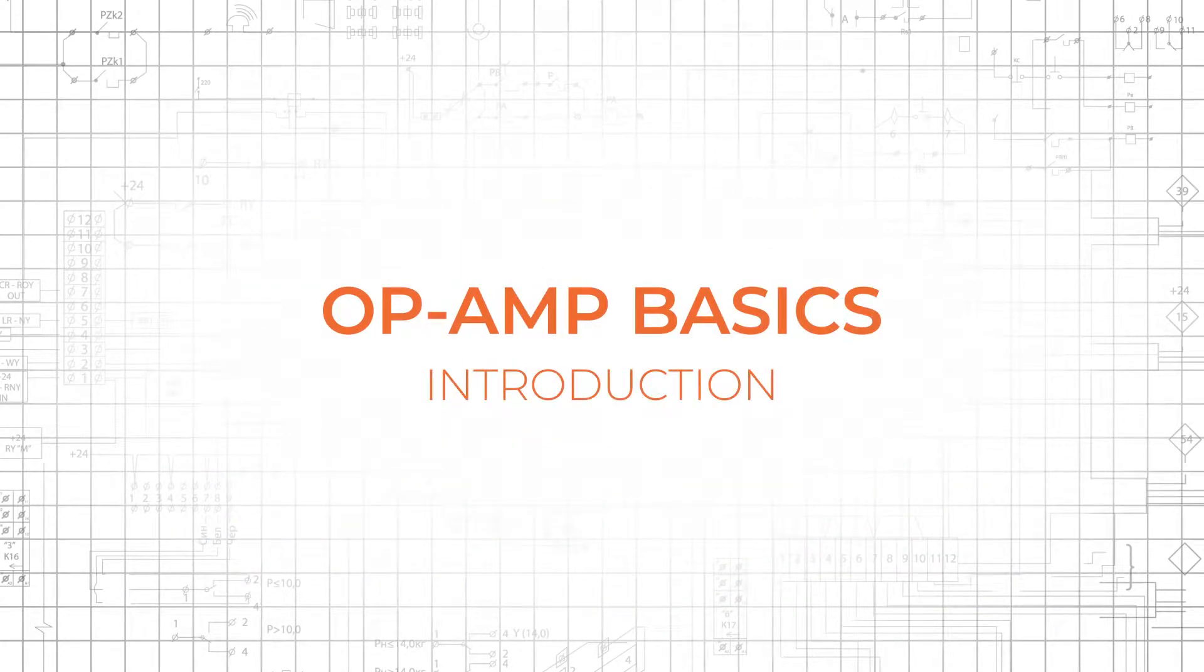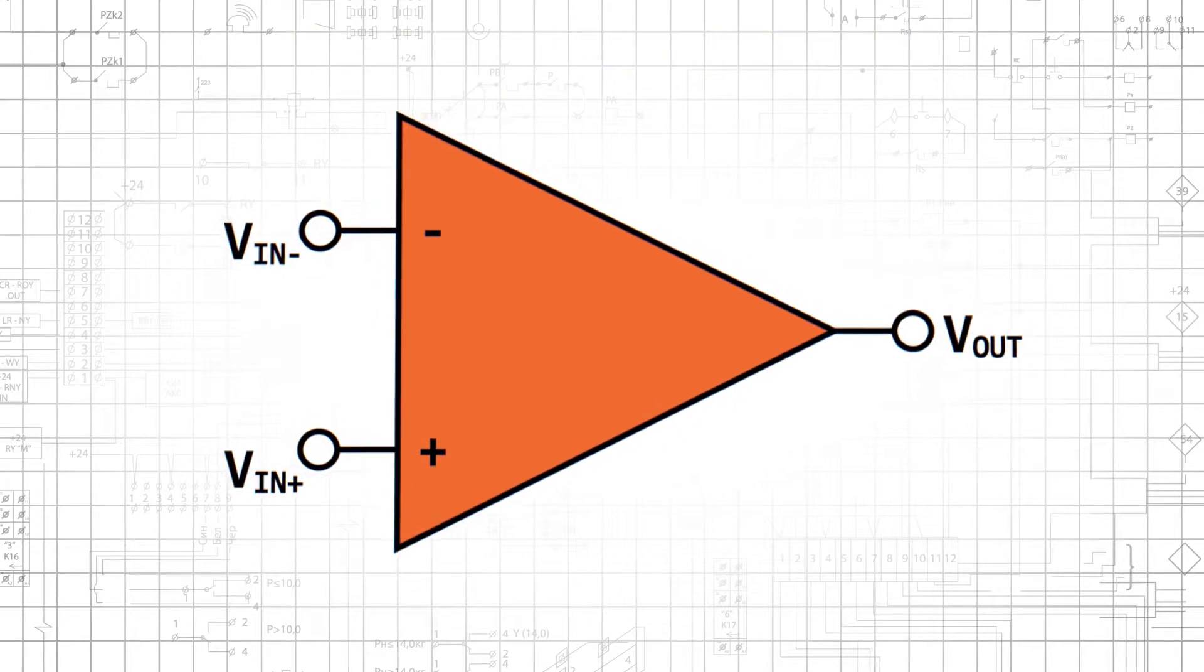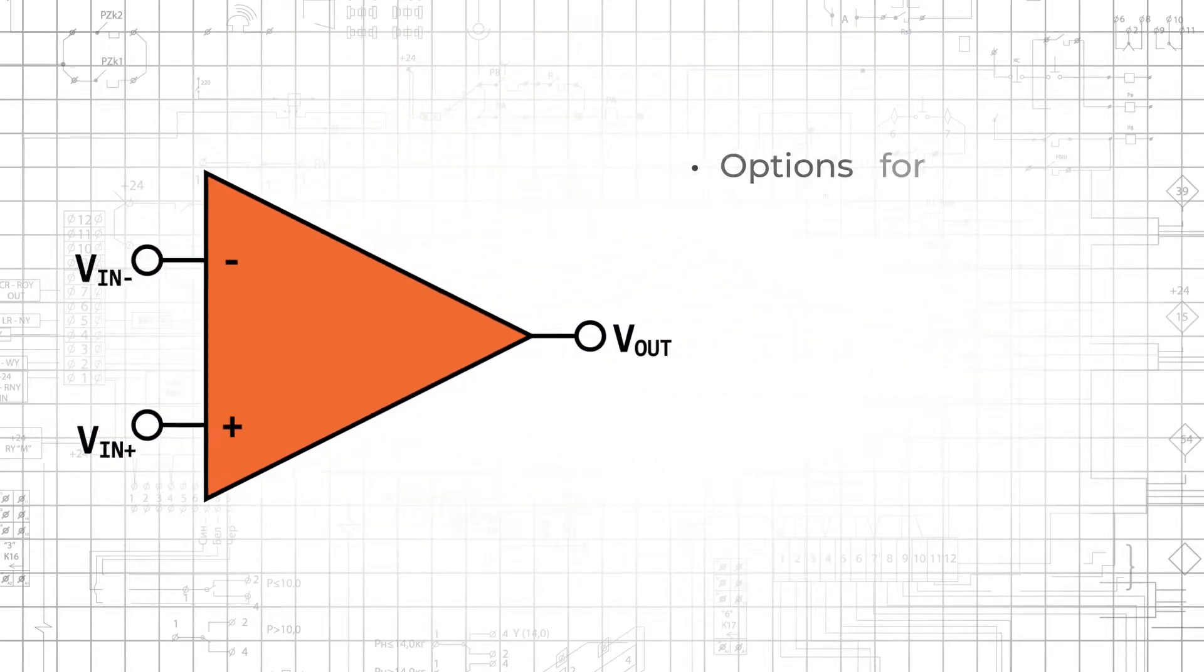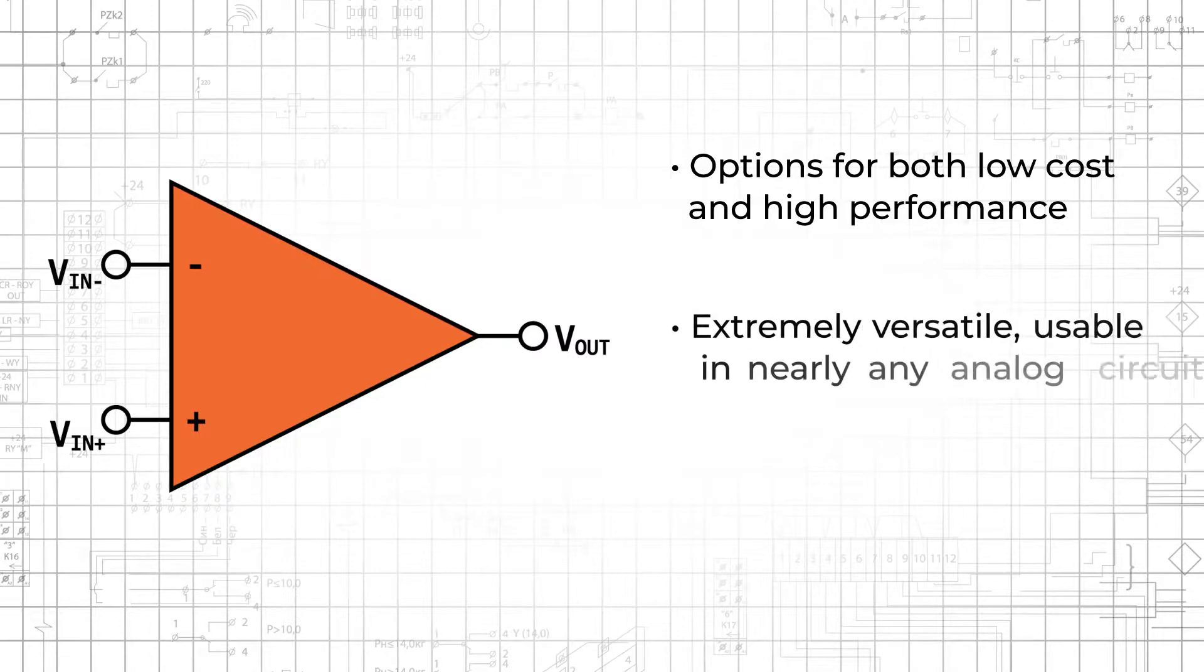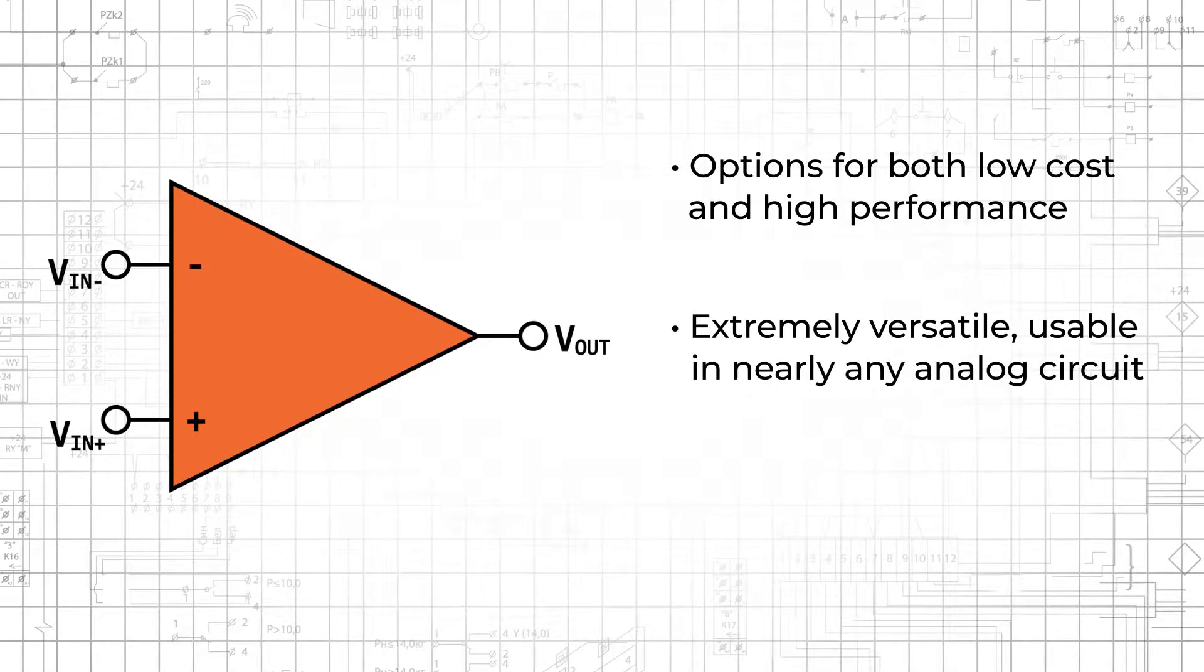The operational amplifier, or op-amp for short, is an essential tool for anyone who designs analog or mixed signal circuits. Op-amps have been produced in large quantities for decades with options for both low cost and high performance. Op-amps are extremely versatile and can be used to implement or improve nearly any analog circuit.